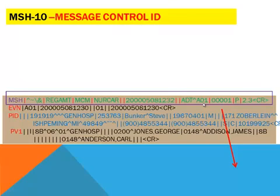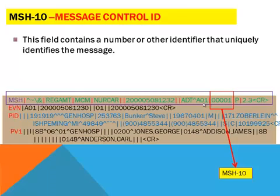Let's talk about the 10th field. It's called MSH10. This is a message control ID. This field contains a number or other identifier that uniquely identifies the message.